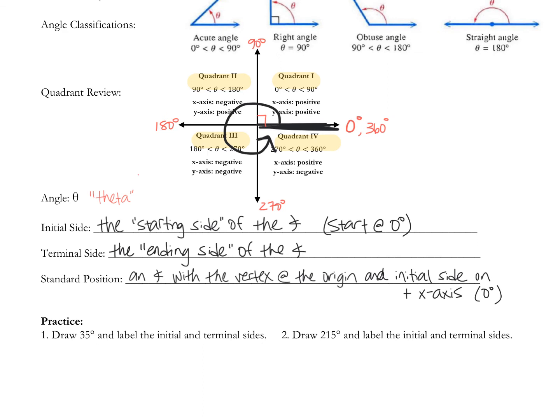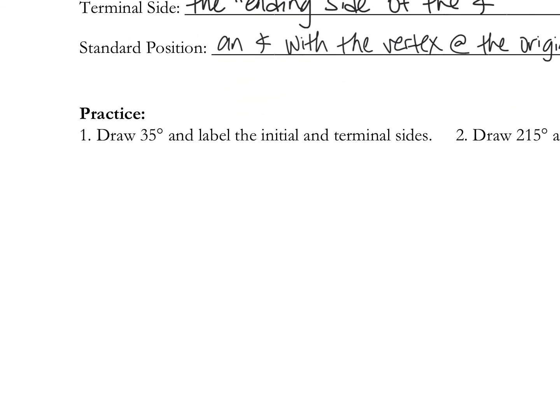So what I want to do — oh, I skipped standard position. It's an angle with the vertex at the origin. The origin is where the axes come together, and the initial side is on the positive x-axis. We always start drawing our angles there and rotate however many degrees we're given. In this first example, it says draw 35 degrees. We have specific ways to draw and label angles, and I'm going to label the initial and terminal side. First I'm going to draw my coordinate plane. We always start drawing on the positive x-axis — this is zero degrees.